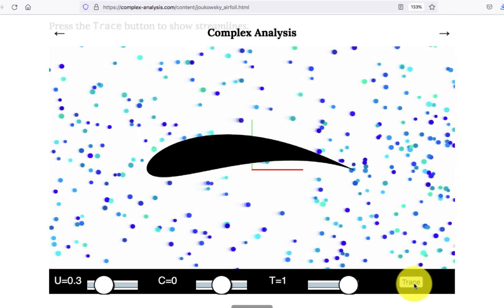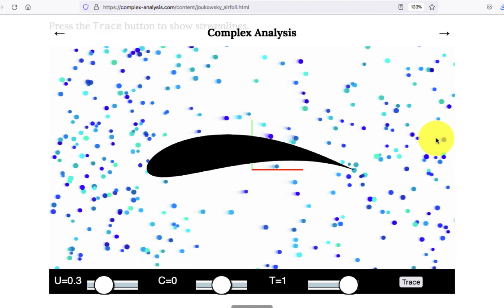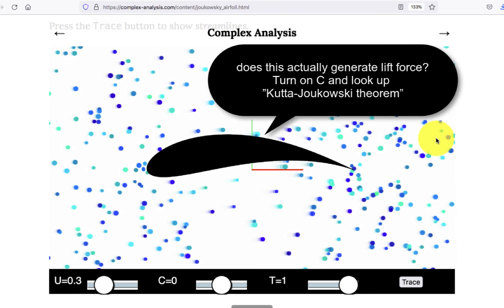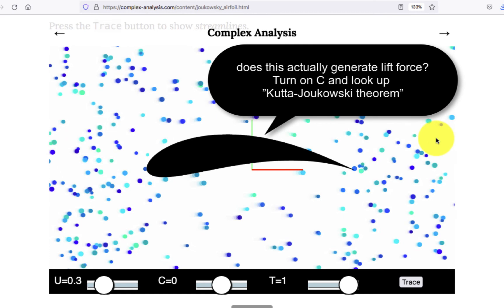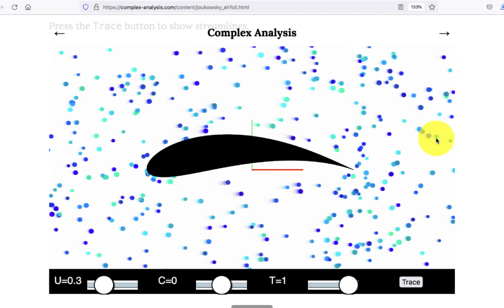Of course, we shouldn't get too excited. This is, again, very simplified. It's not at all clear that a real airplane wing works like this. In particular, this is two dimensions. So this wing is also infinitely long in the transverse direction into and out of the screen. But at least I think this is pretty impressive for simple enough math.